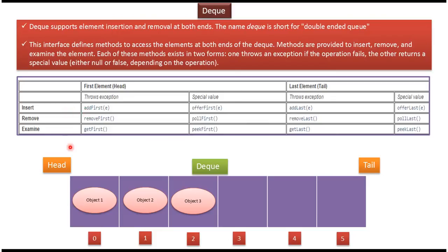To insert at the head side, we have two methods: AddFirst and OfferFirst. The AddFirst method, if the operation fails, will throw an exception. The OfferFirst method, if the operation fails, will return FALSE. To remove an element from the head side, we have two methods: RemoveFirst and PollFirst. RemoveFirst will throw an exception on failure. PollFirst will return NULL on failure.